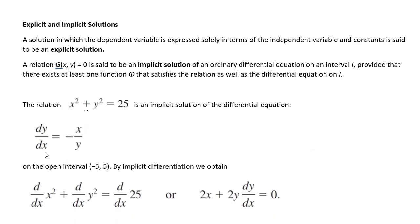And then that brings us to implicit and explicit solutions. Okay, so a solution in which the dependent variables express solely in terms of the independent variable and constants is said to be an explicit solution. And a function, and remember where I said, if that equals zero, that means something. So if I have a function expression where it equals zero, that's said to be an implicit as opposed to an explicit. So an implicit solution of an ordinary differential equation, provided there exists at least one function that satisfies that.